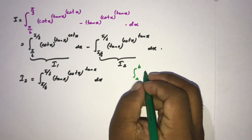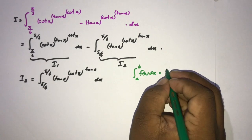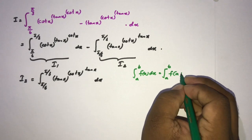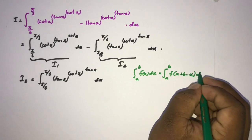We know a to b, f of x dx is equal to a to b, f of a plus b minus x dx.